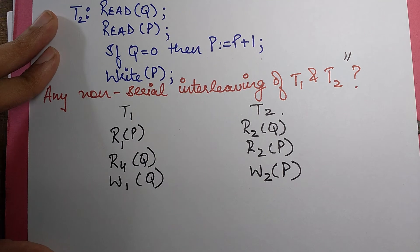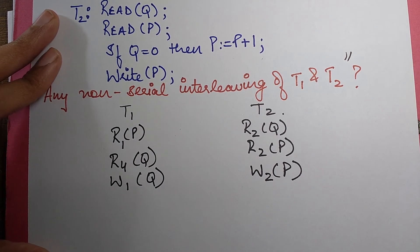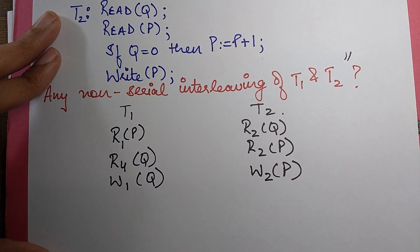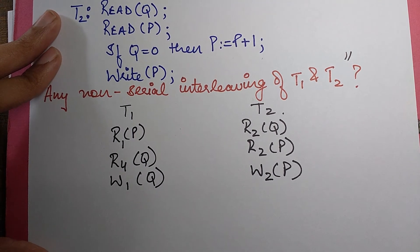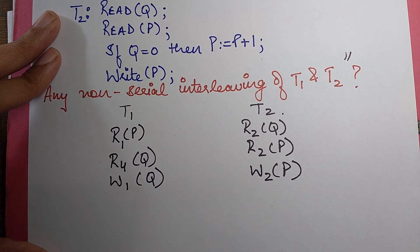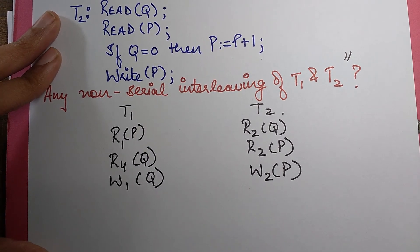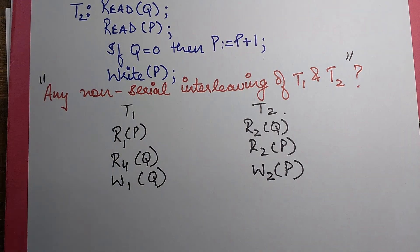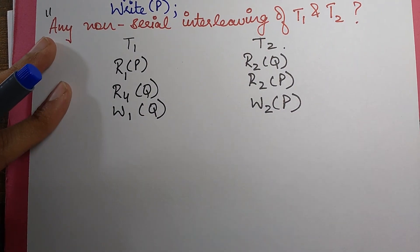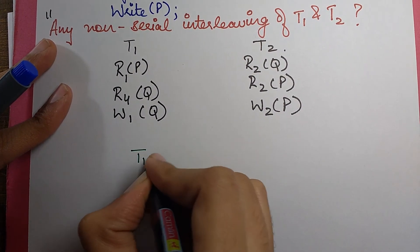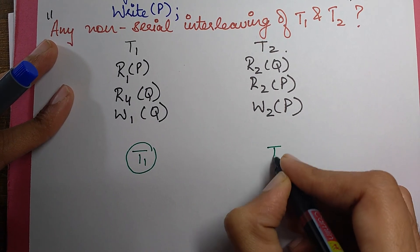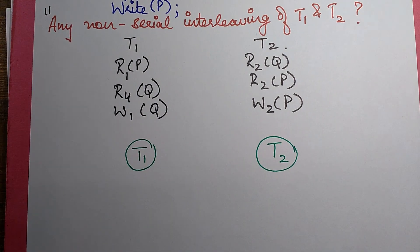Next, as I've mentioned before, whenever you have a serializability question just go for the precedence graph method, which is the fastest method to check for conflict serializability. I'm going to draw that graph. Since we have two transactions, I draw two nodes: T1 as one node and T2 as the other node.